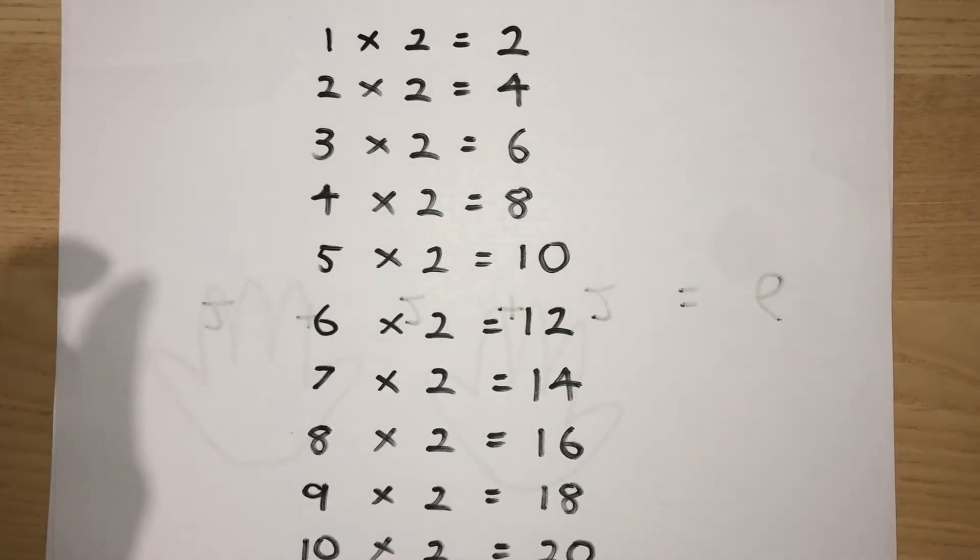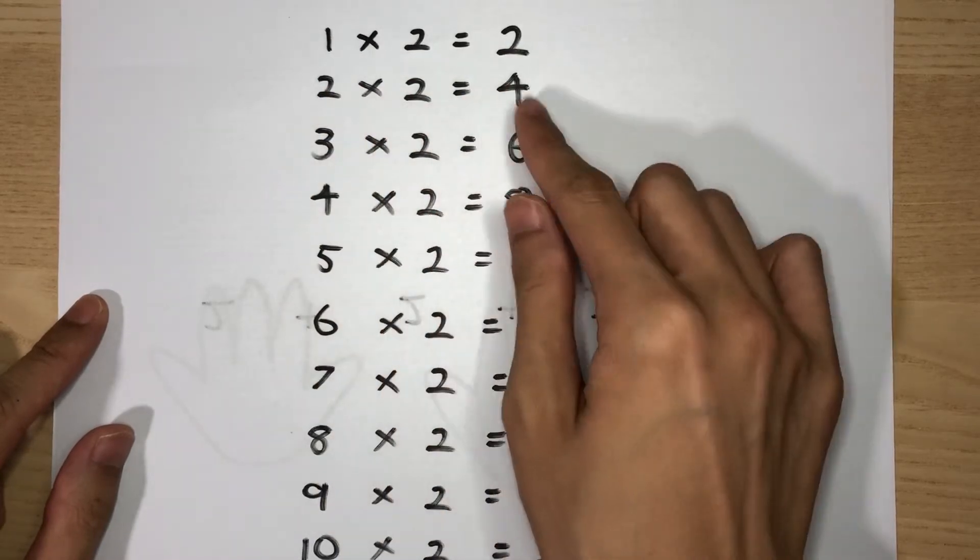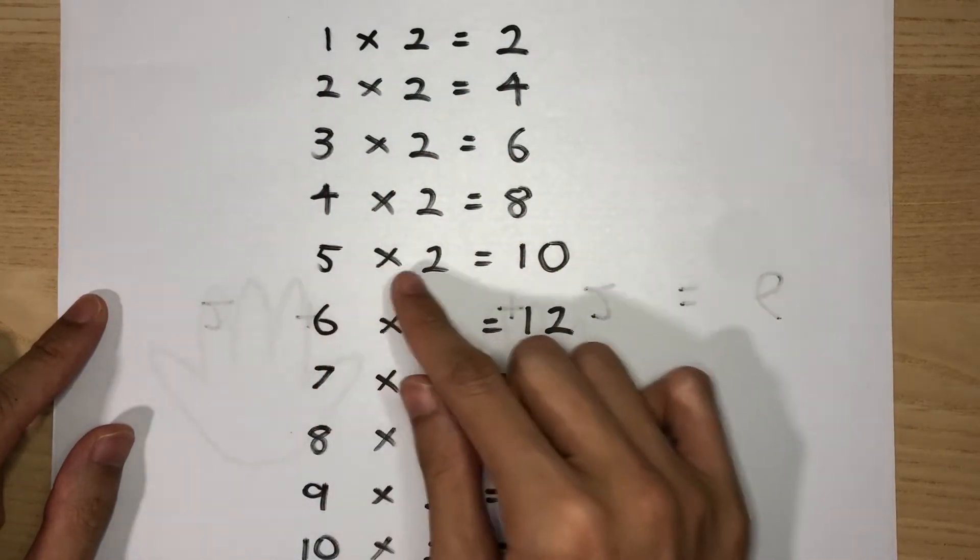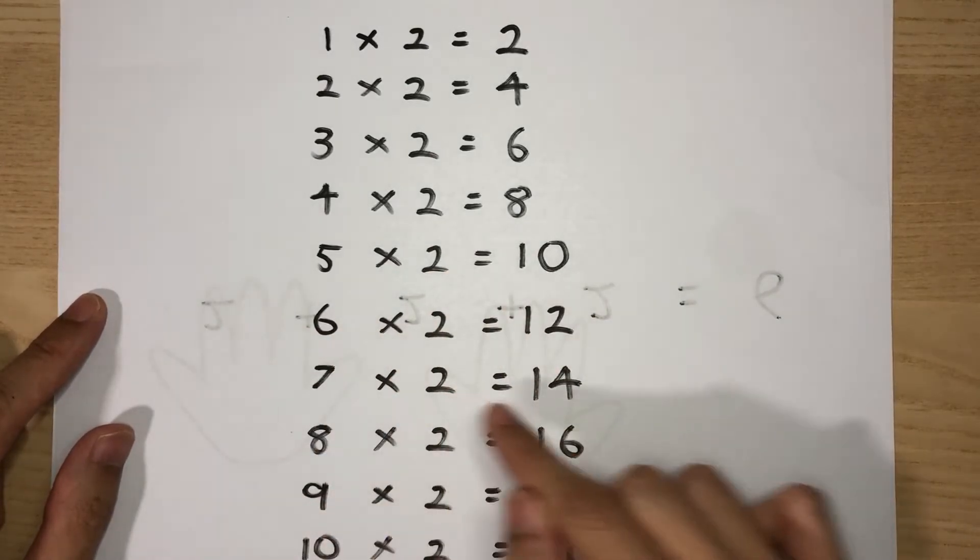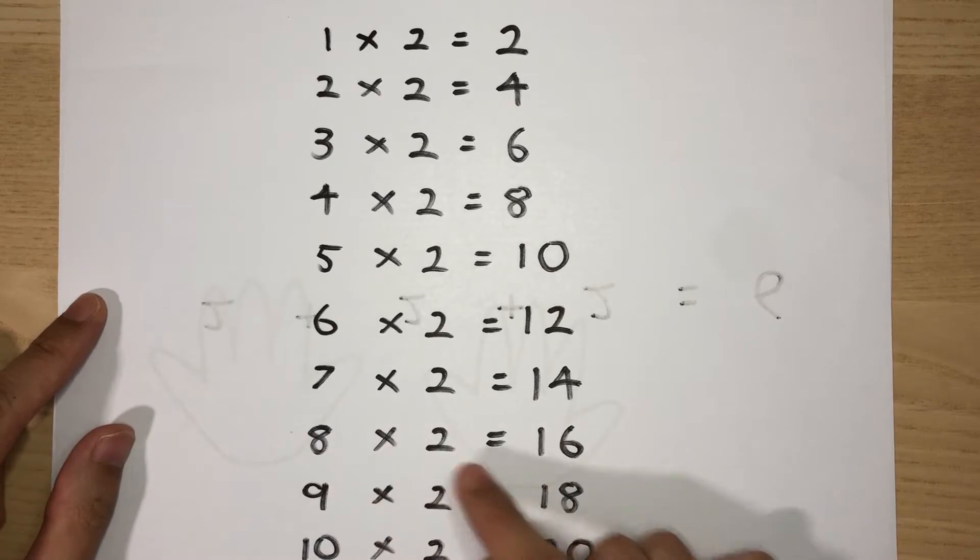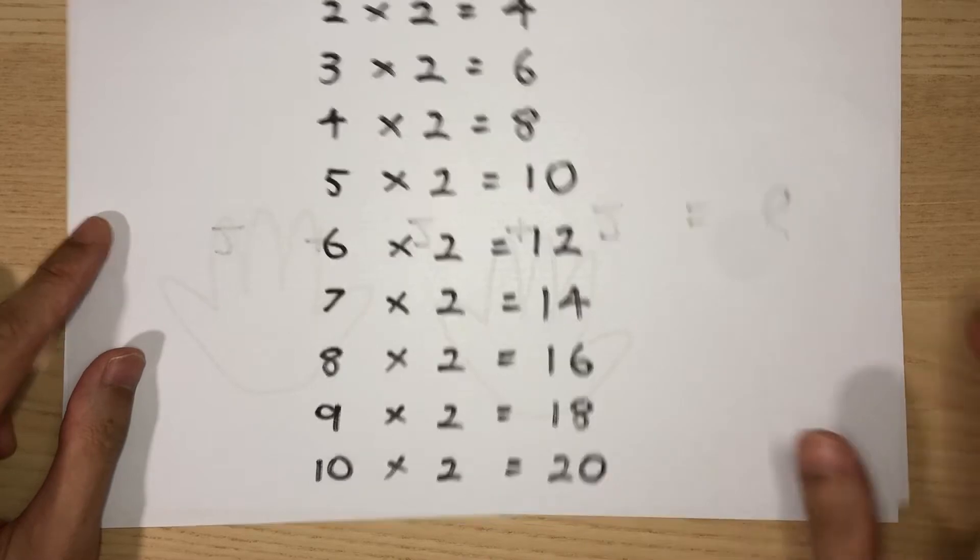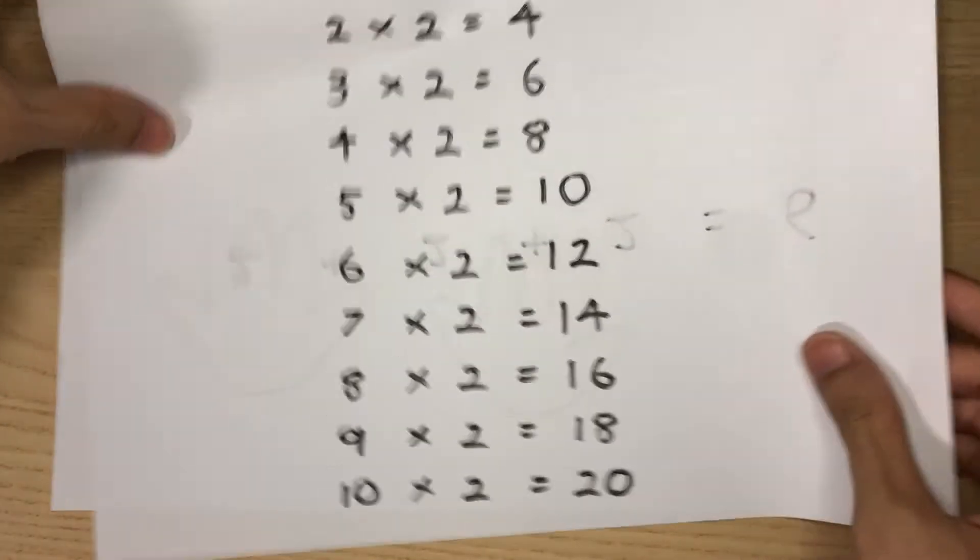What is the simpler way of remembering this? We already know that one times two is two, two times two is four, three times two is six, four times two is eight, five times two is ten, six times two is twelve, seven times two is fourteen, eight times two is sixteen, nine times two is eighteen, and ten times two is twenty. But how are we going to remember this?